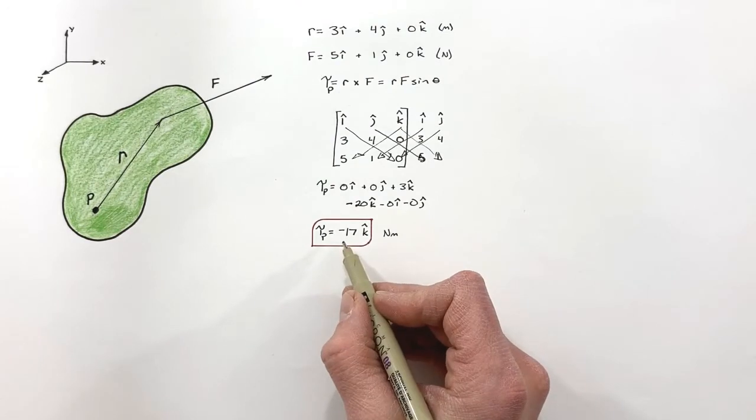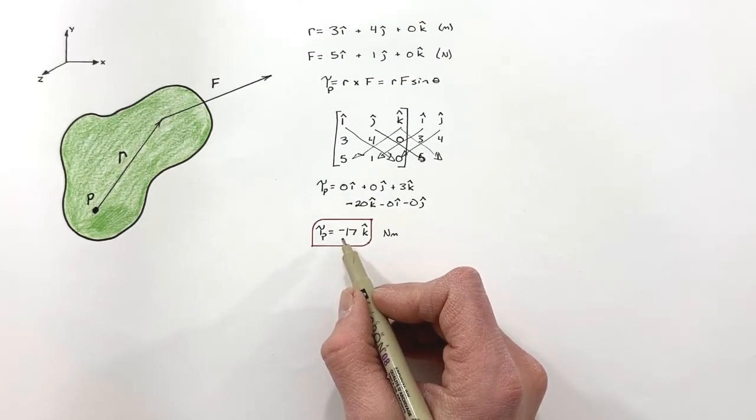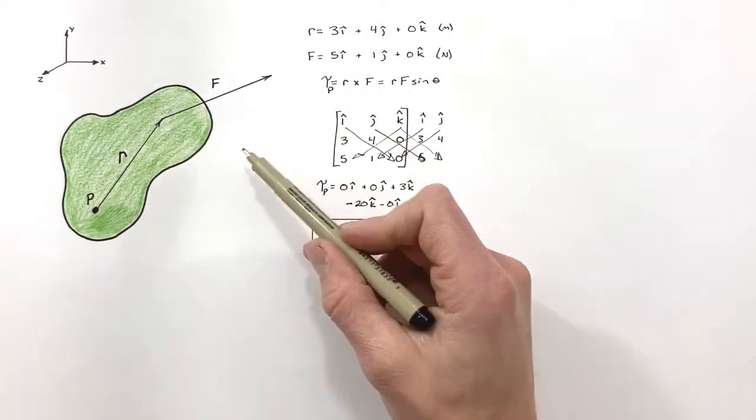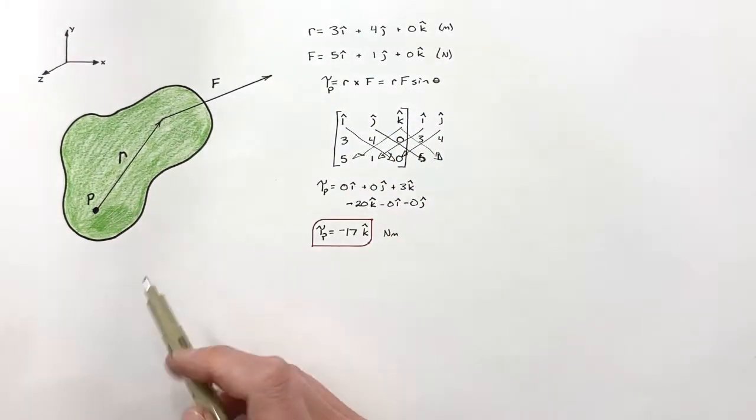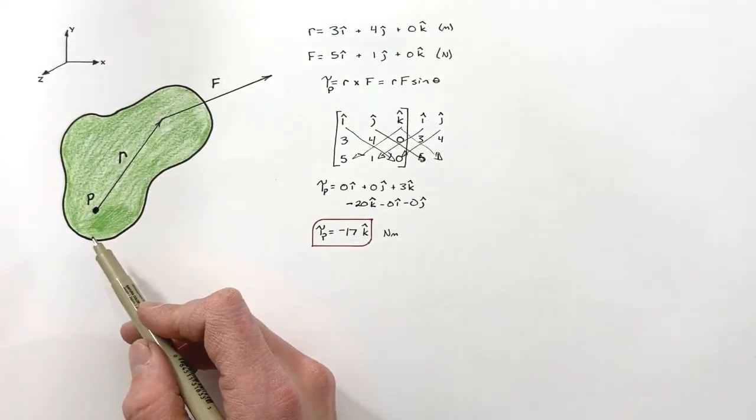If this result had been positive, that would mean the torque was out of the page. Now this may seem like an awful lot of work to do when we could have just gone through and solved for magnitudes and directions, so what I want to do is complicate this problem a little bit.